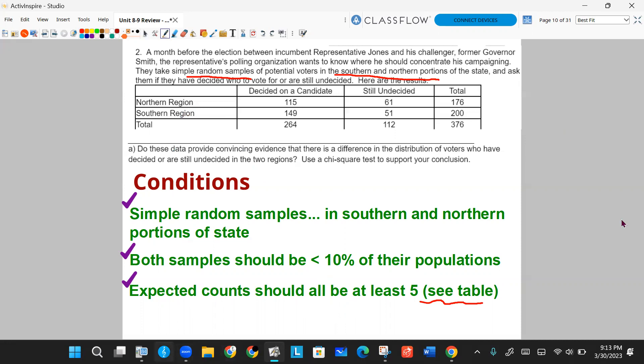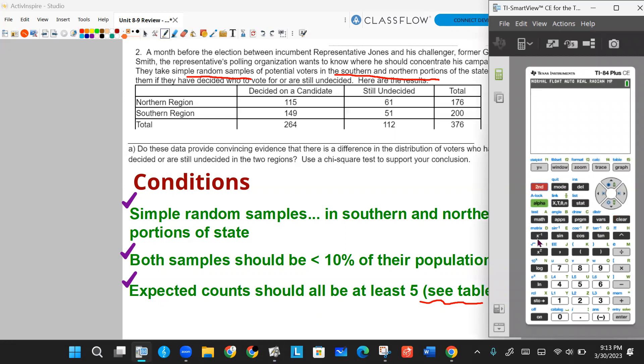But let's use our matrices. So when you're going to enter these in your matrix, you're going to go to second, x to the negative one power. Go to edit. This is going to be a two-by-two matrix. Don't use your totals. And just put the raw numbers in, 115, 61, 149, and 51. And we're going to run the tests. Now, in your calculator, if you click on stat tests, it's chi-squared tests. It's not going to be diagrammed as homogeneity or independence or association or goodness to fit. It's just a chi-squared test. And it'll use your observed values. It'll put your expected values in matrix B.